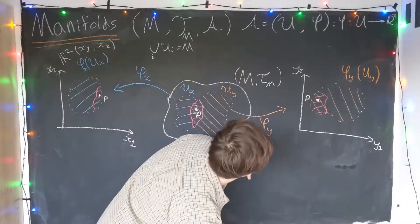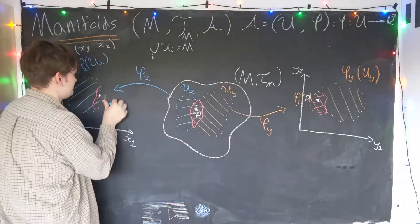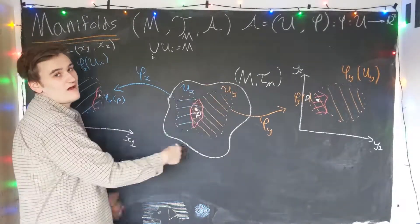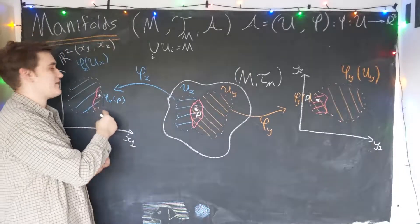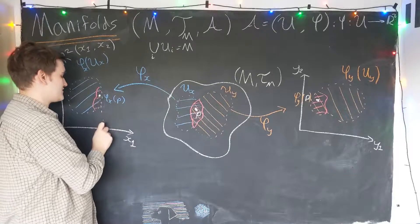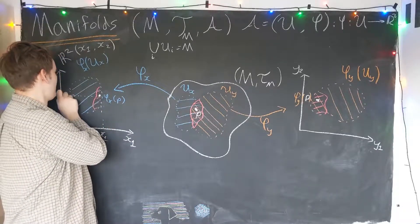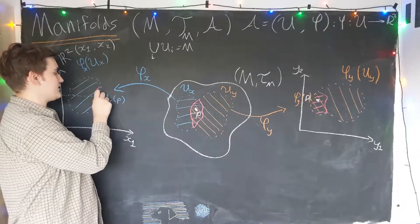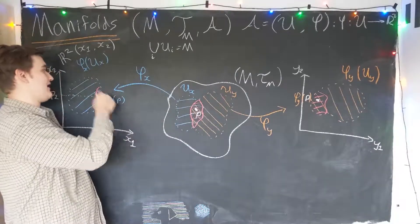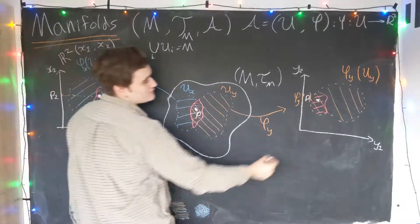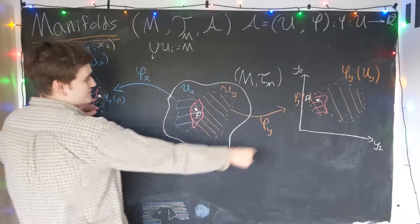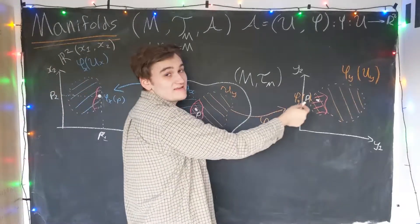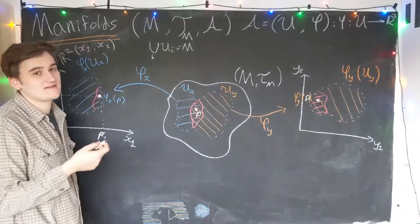Any point you choose in the original manifold is going to have some image that appears in both charts. Both charts are perfectly valid representations of this underlying abstract manifold. We can concretely talk about points in a chart by giving two numbers — the coordinates. So if we give you a point in X coordinates, how do we find out what it is in Y coordinates? The way to do that is using a so-called transition function.